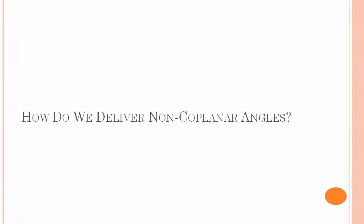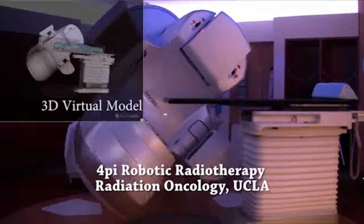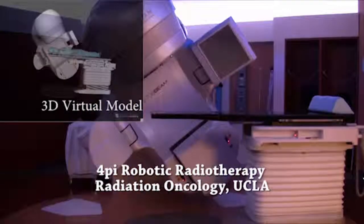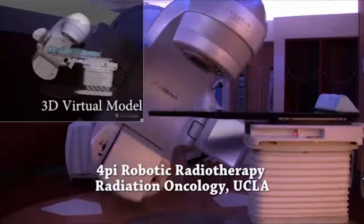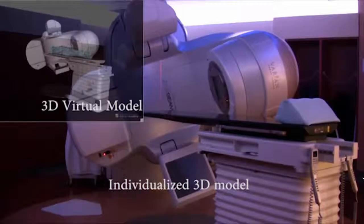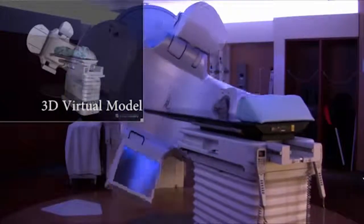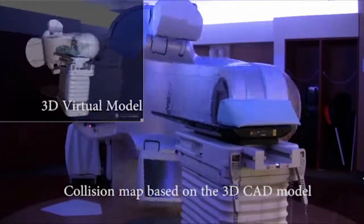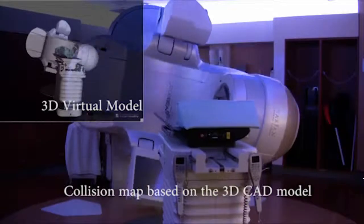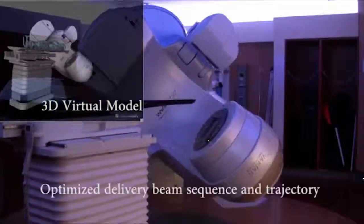So how do we deliver non-coplanar angles? 4Pi non-coplanar radiotherapy can be implemented with current clinical technology shown here. So what you see is a 4Pi non-coplanar radiotherapy implementation using the Varian TrueBeam. In the top left-hand corner, you see a 3D virtual model that is used in creating collision maps as well as optimizing the beam sequence. This beam sequence is converted into XML format, which is then inputted into the TrueBeam developer mode for implementation.